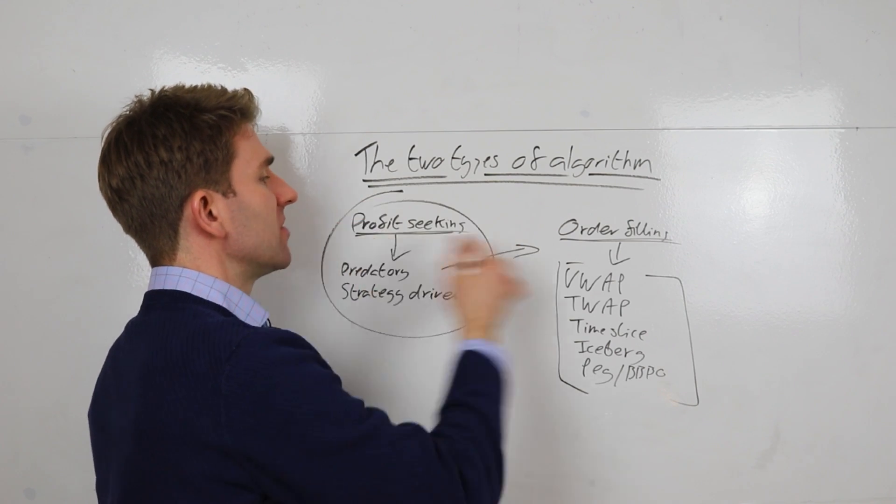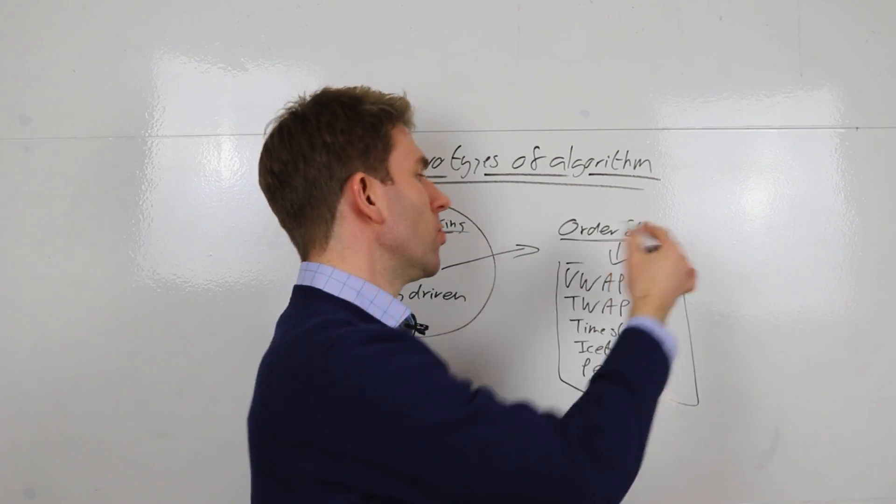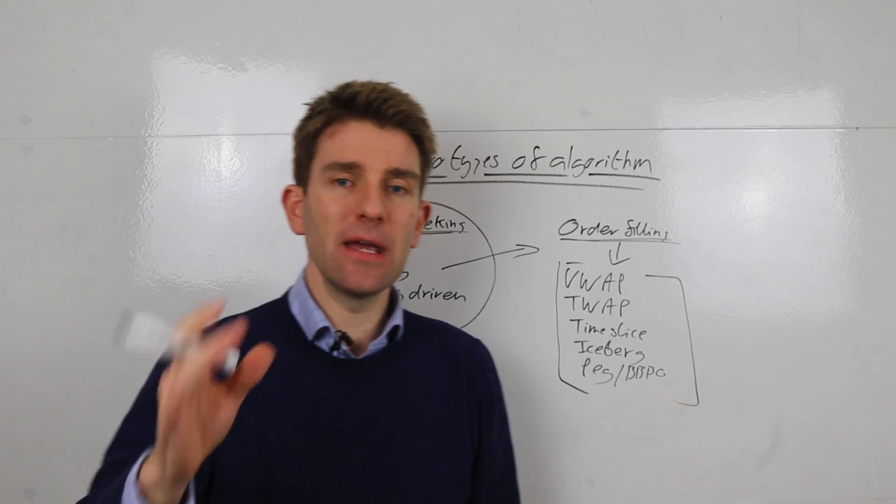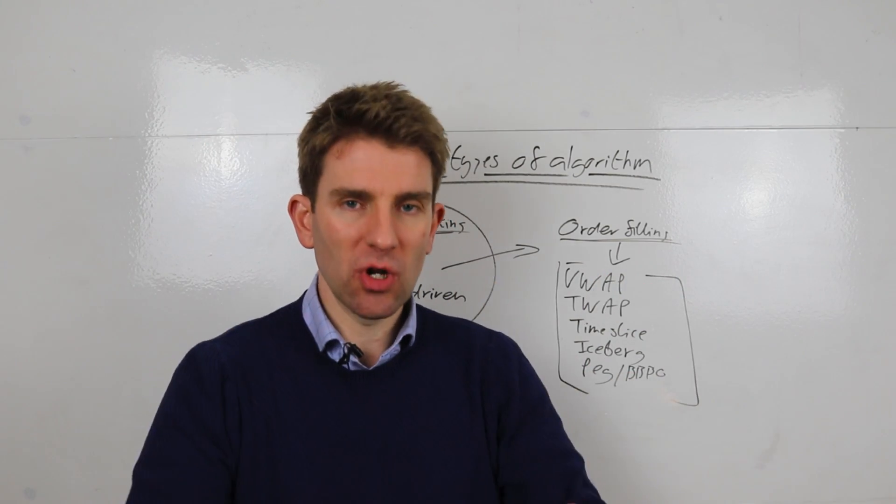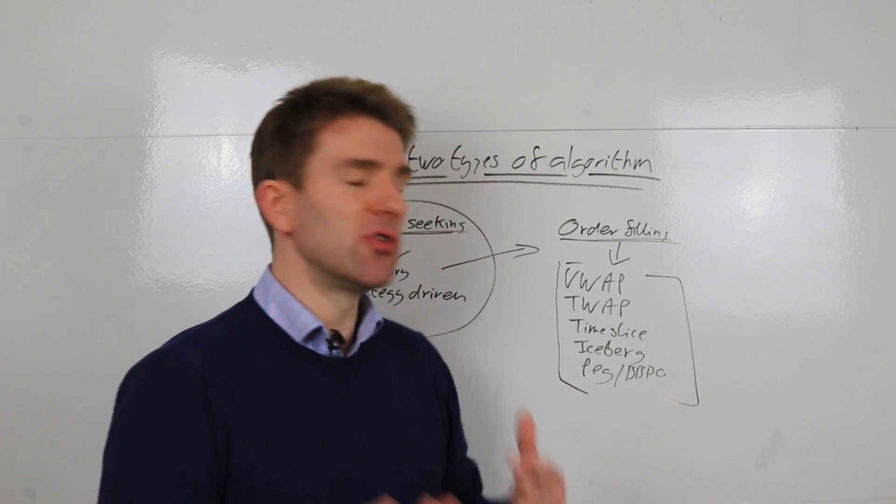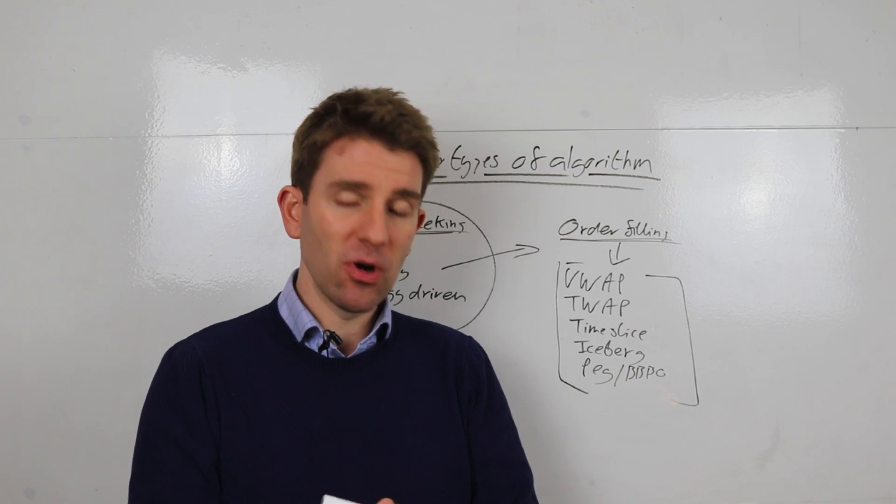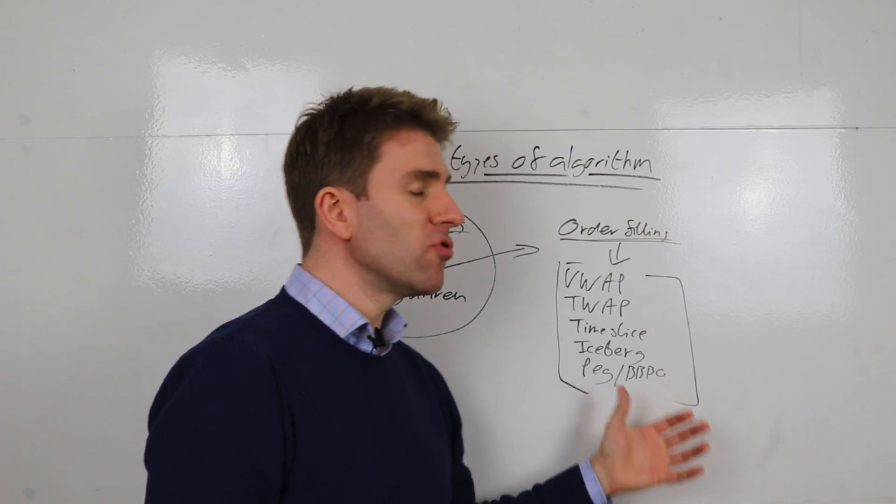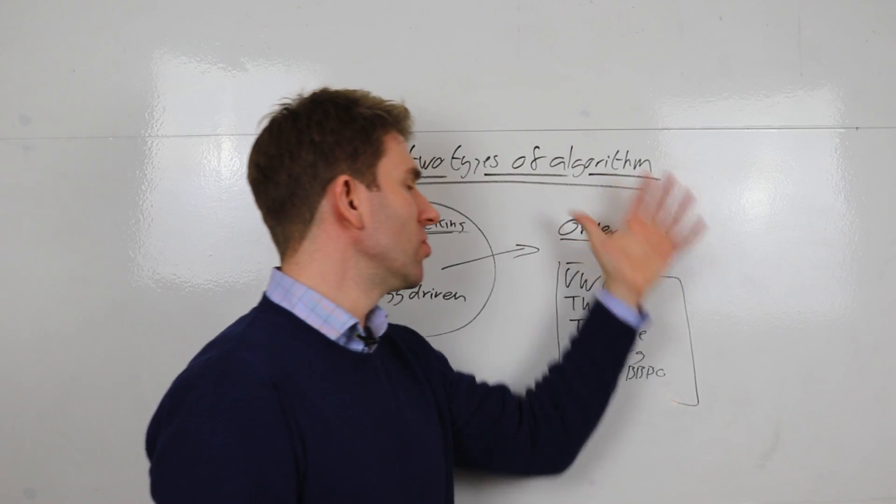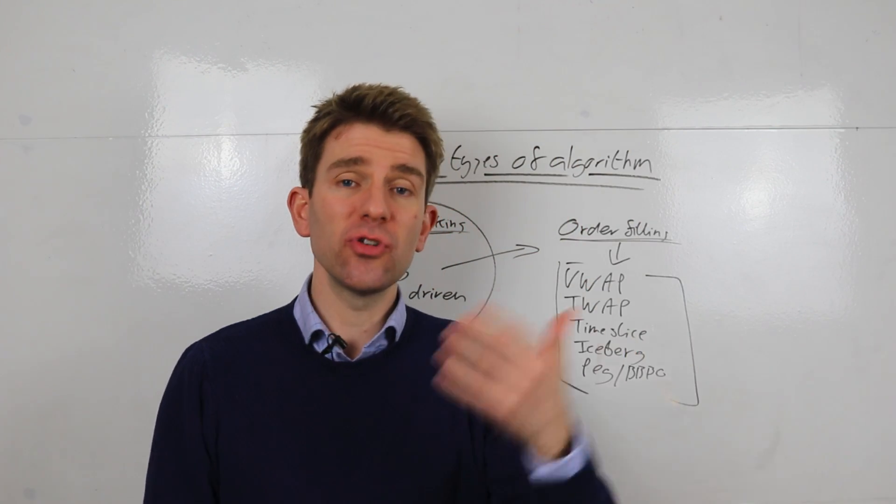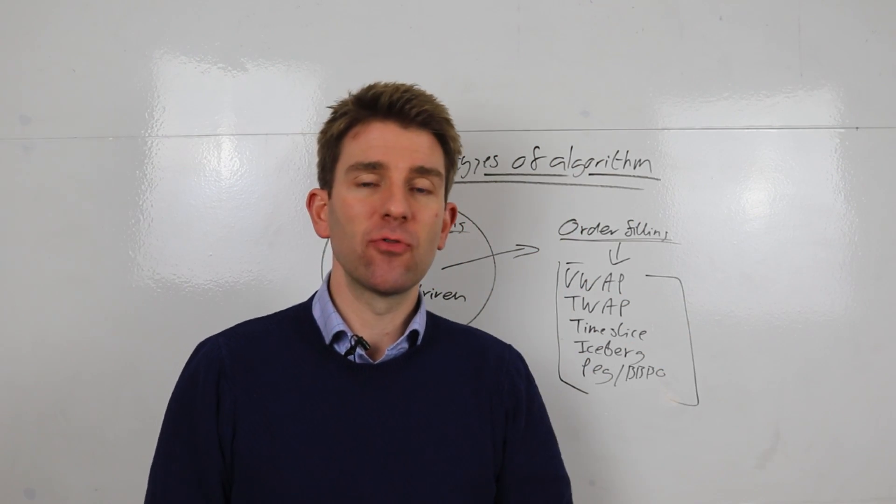The second one we're looking at is order-filling algos. They're not interested in making profit per se on the algo. Of course, the ultimate goal of anyone placing a trade generally speaking is to make a profit, but these algos are programmed purely to fill an order. And generally, you're going to use an order-filling algorithm when you can't just go in and buy the amount of quantity that you want.